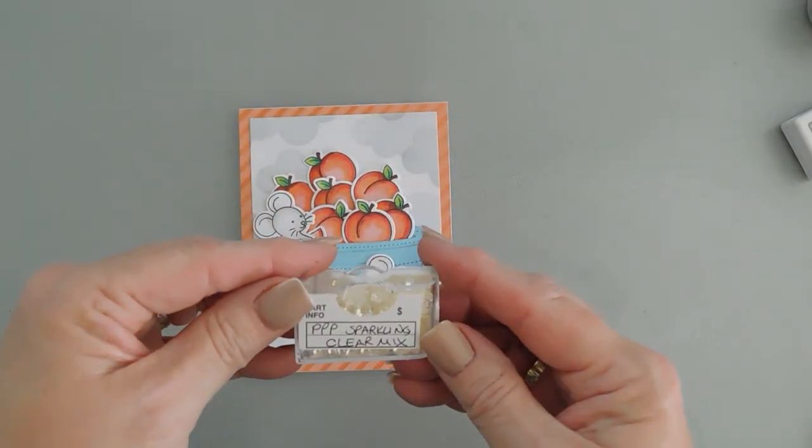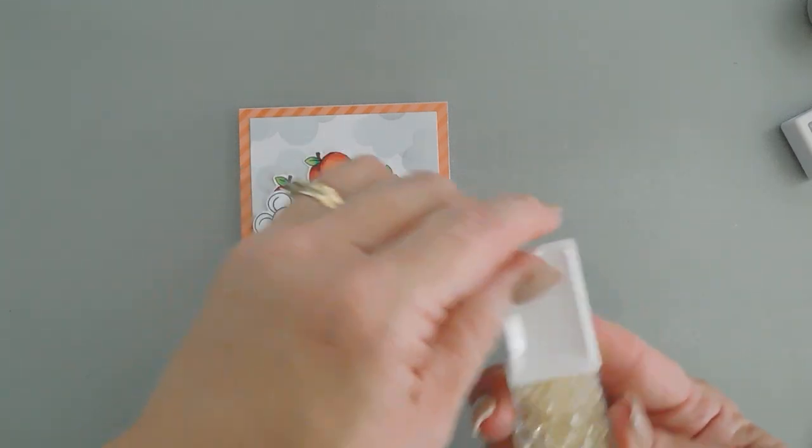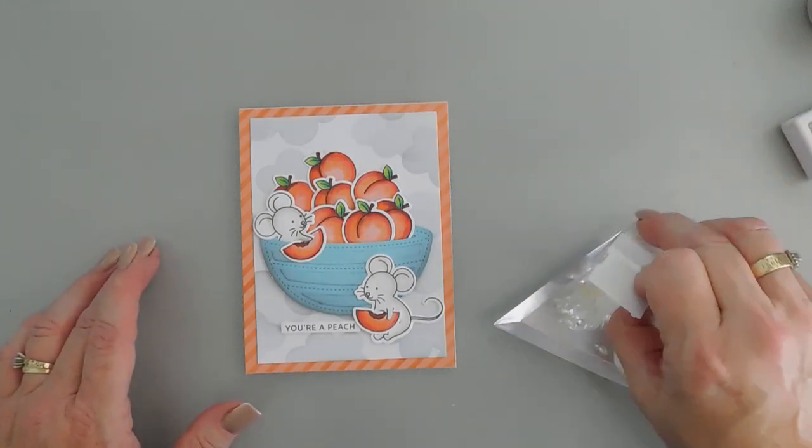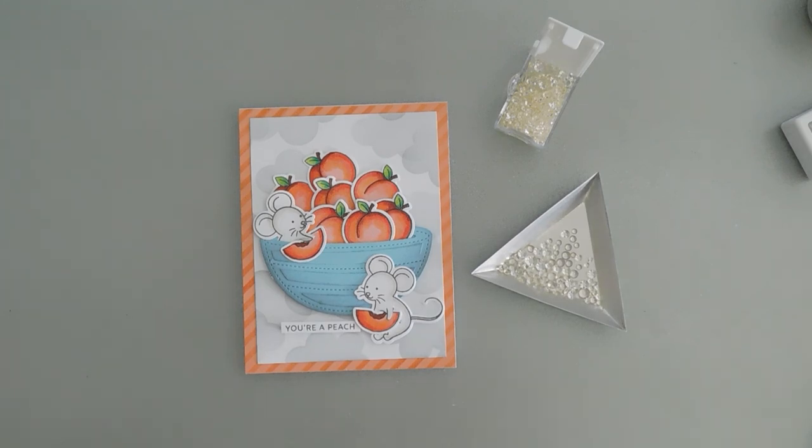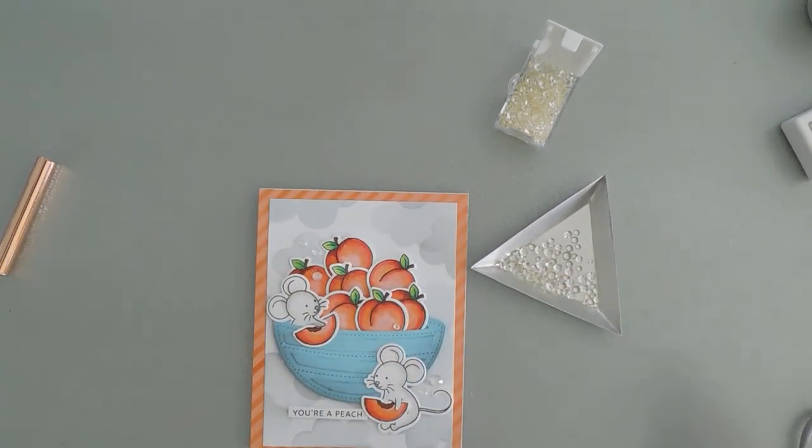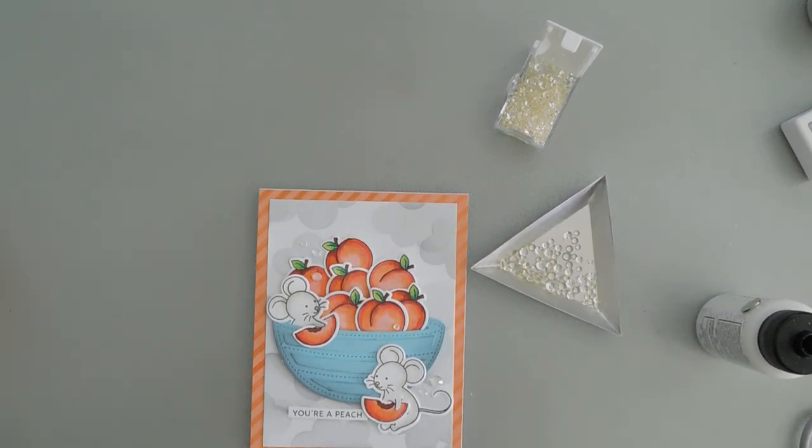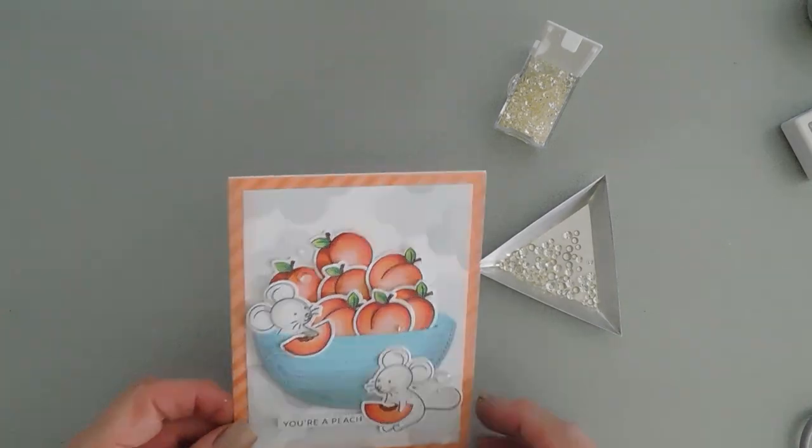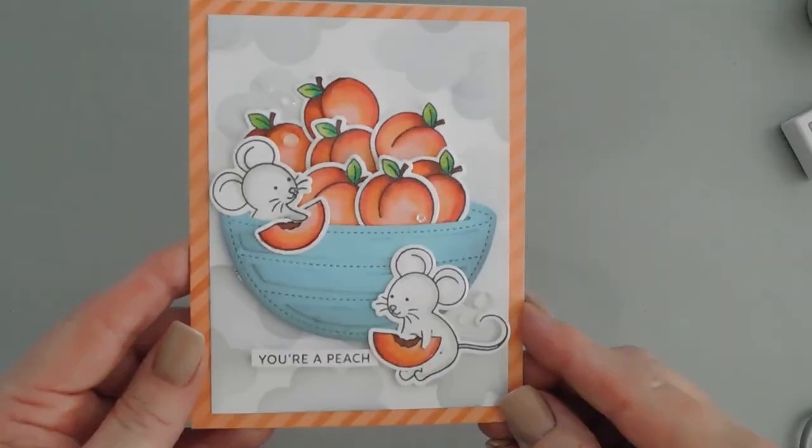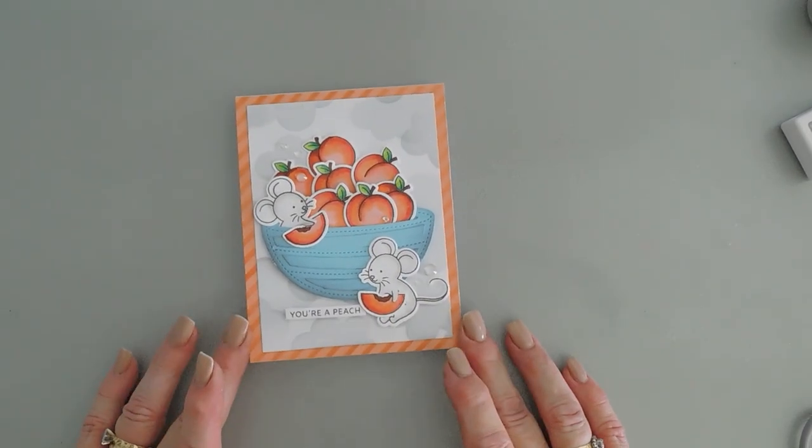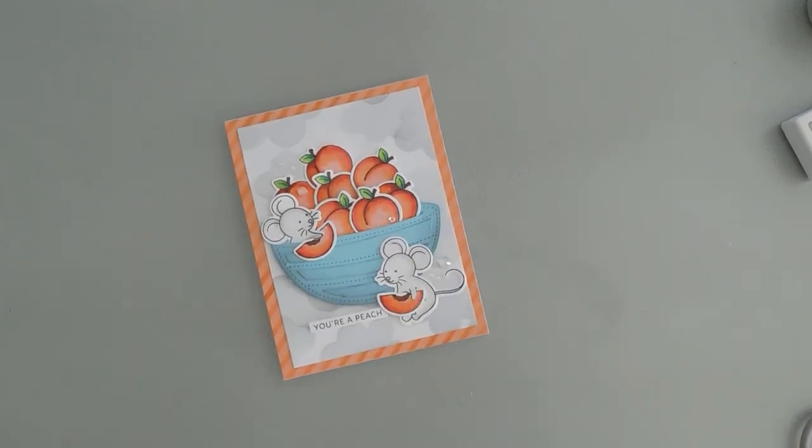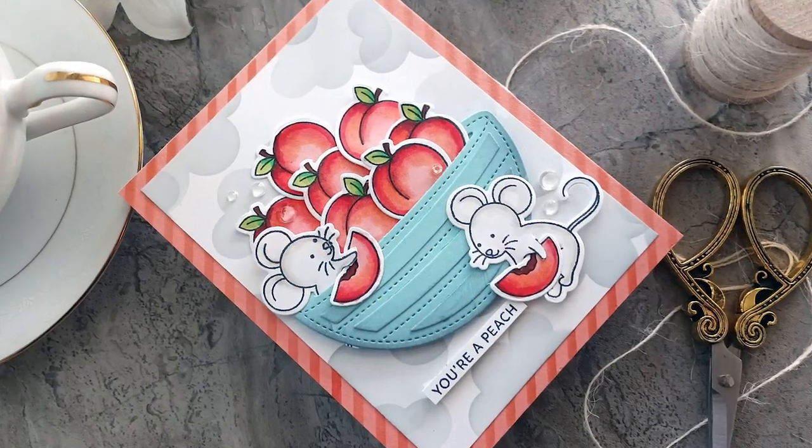For finishing touches I'm going to bring in some Pretty Pink Posh sparkling clear jewels and we're going to add a few gems around our image which I'll just use my glue for that. I think that's just the right amount, a few little gems. Super cute fruit bowl, super cute fruit salad. I think it's a fun release. If you haven't had a chance to check it out I'll leave the entire release down below. It's super fun and I think you'll really like it. Have a wonderful day, thanks for joining me. We will see you soon, bye bye.